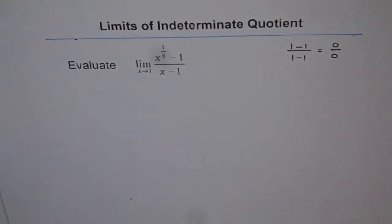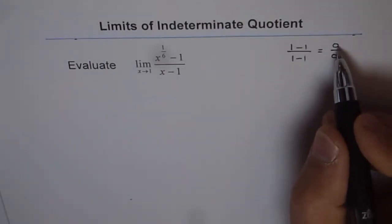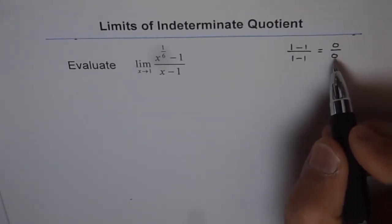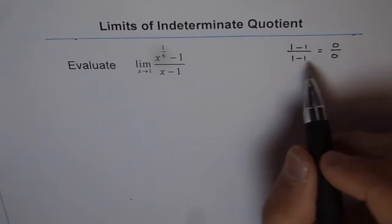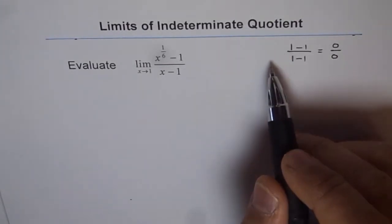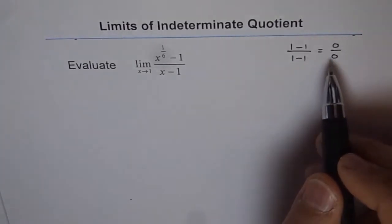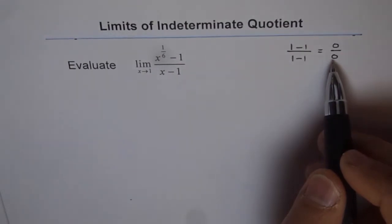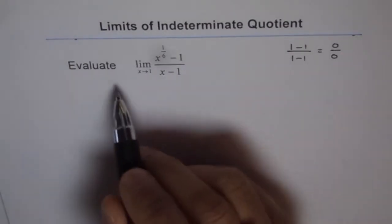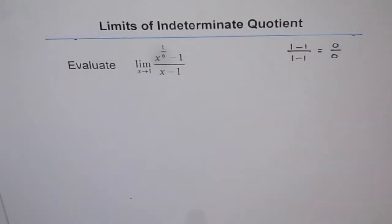Now, 0 over 0 is not defined in mathematics. But it gives us a hint that this is an indeterminate form, and it can have a limit as x approaches 1. So there is a possibility.